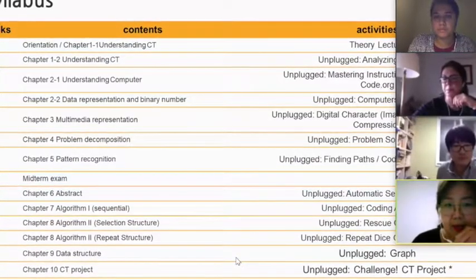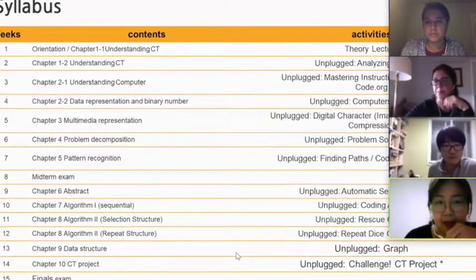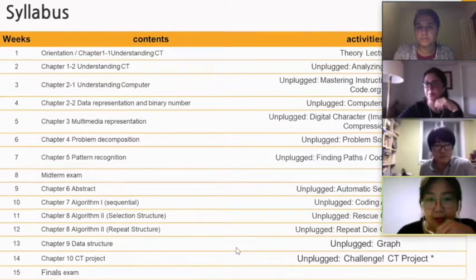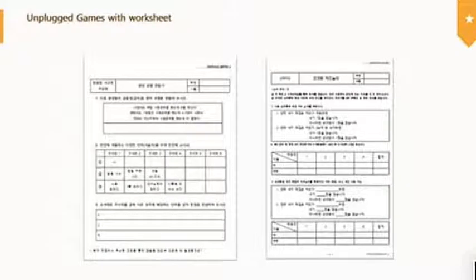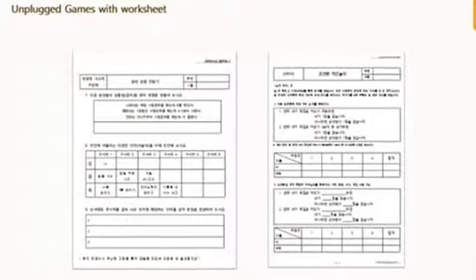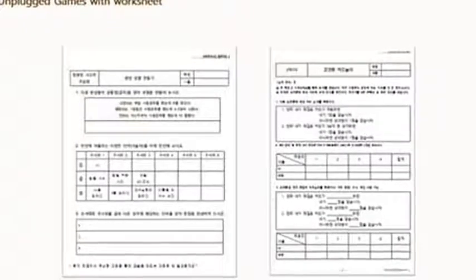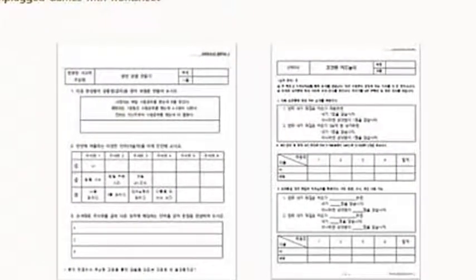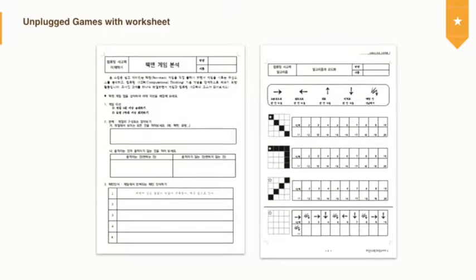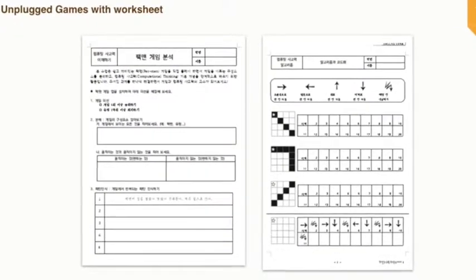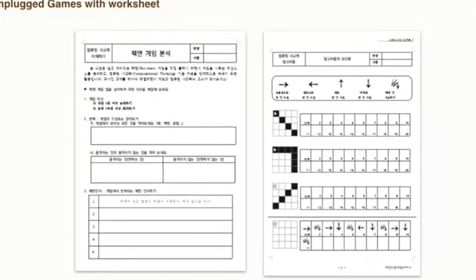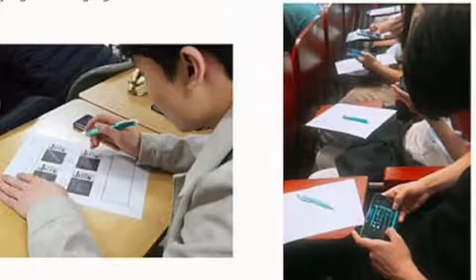Every week I gave students a worksheet for unplugged activities. For example, I showed unplugged game worksheets — the left side was for abstraction, making random sentences; the right side was for conditional games using dice apps.